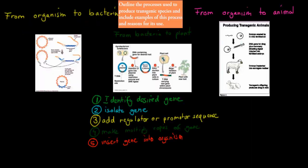The dot point itself says to outline the processes used to produce transgenic species, and include examples and reasons for its use. There are usually about five steps within making any transgenic species. The first thing we have to do is identify desired genes.